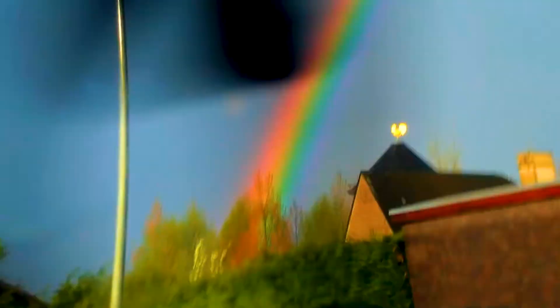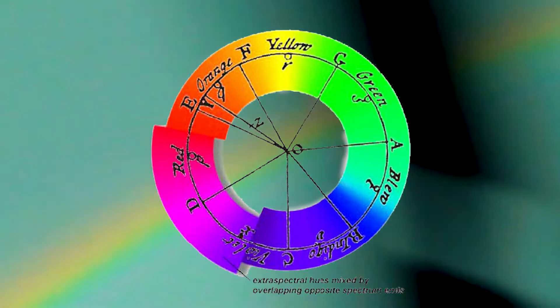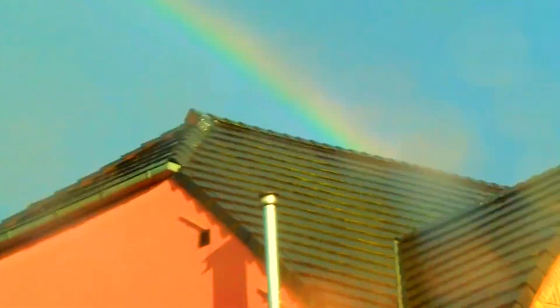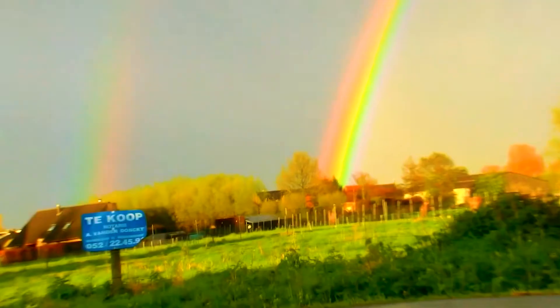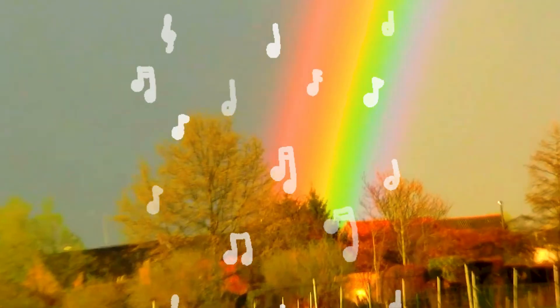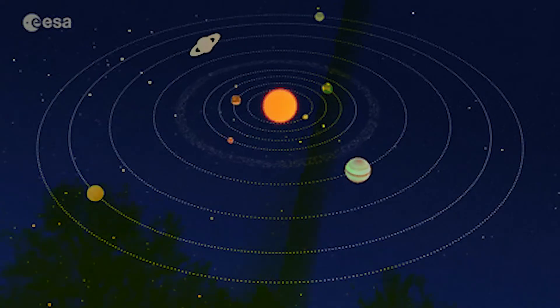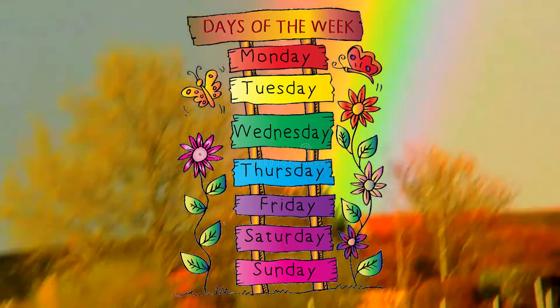In 1672, Newton chose to divide the visible spectrum into seven colors, out of a belief derived from the beliefs of ancient Greek sophists, who thought there was a connection between the colors, the musical notes, the known objects in the solar system, and the days of the week.